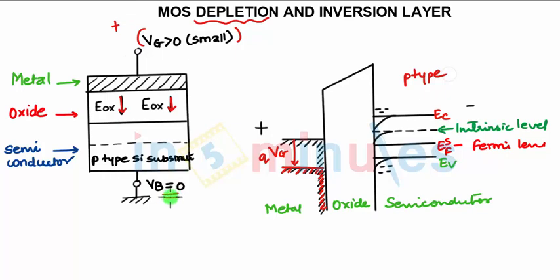The positive surface potential causes the energy bands to bend downward near the surface. The bands are bending downwards because this positive charge will attract the electrons from the P substrate at the boundary.